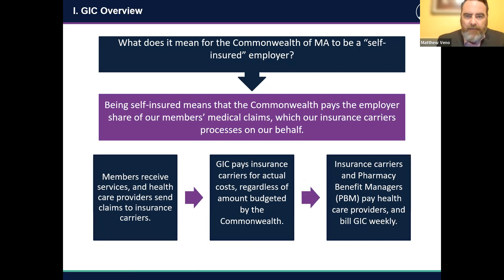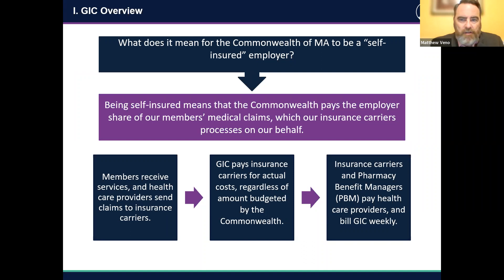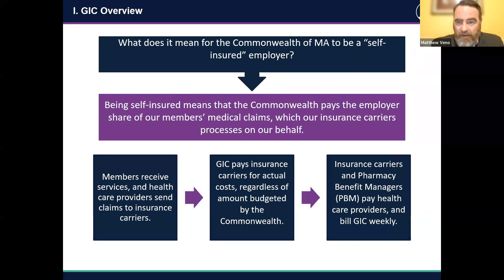Noting that the Commonwealth contributes the majority of GIC funding, the Commonwealth is really the self-insured employer and the GIC administers that benefit. This means that the Commonwealth pays the employer share of medical claims regardless of how much has been budgeted for those claims. It's really the state that holds insurance risk for the GIC, not our health insurance plans. So if medical claims in a given year exceed what the state has budgeted, it is the state that will pay those claims and it really doesn't impact our members.